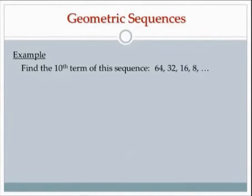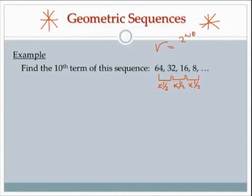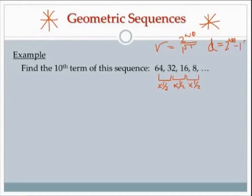I want to find the 10th term of this sequence. It's geometric because I'm multiplying the same number each time. The numbers are getting smaller — to get from 64 to 32 I multiply by one half. In case you can't figure out r, r is always the second number divided by the first number. If you know it's arithmetic and want to find d, take the second number minus the first. Most of them you'll be able to look at and know r and d right off the bat, but you can always use those formulas.